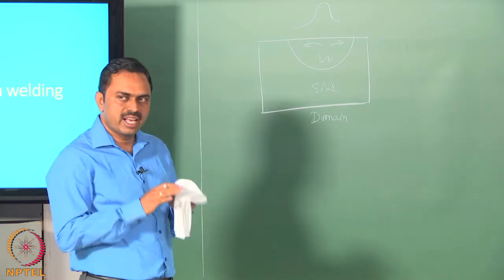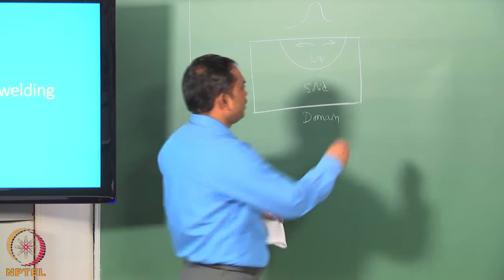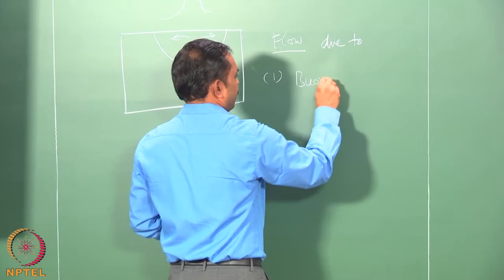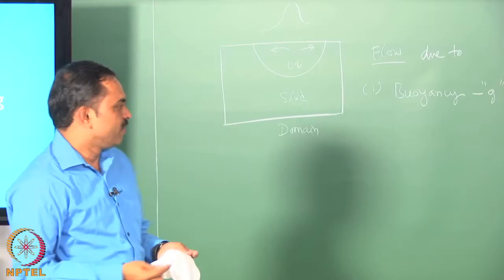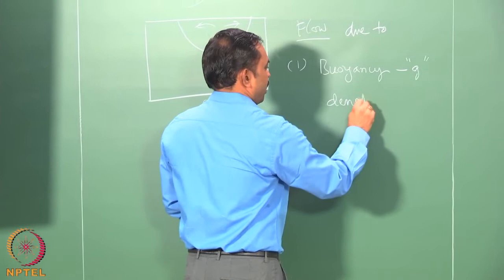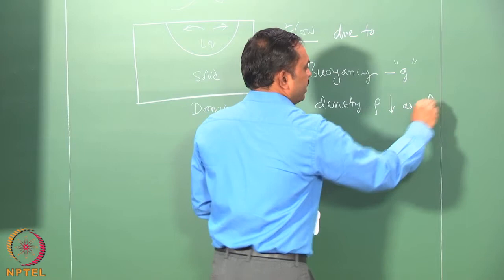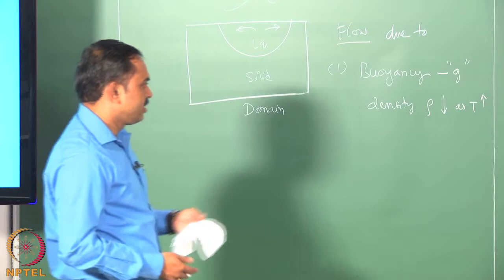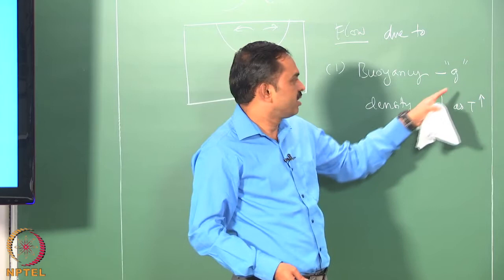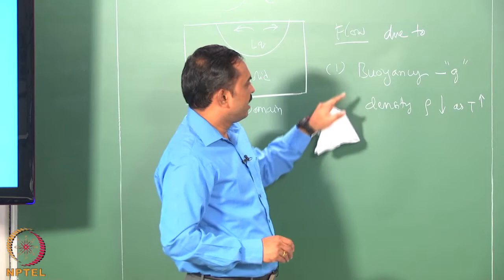What are the reasons why the liquid melt pool would have any convection — why does it not stay quiescent, that is, without any convection? The first reason is due to buoyancy, caused by gravity. When we have a fluid which is hot, the density usually decreases as temperature increases for most fluids, so hotter liquid tends to go up and colder liquid settles down. This natural movement is driven by gravity, meaning that when there is no gravity acting, buoyancy convection is suppressed.